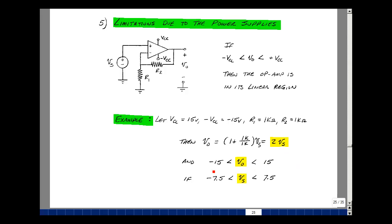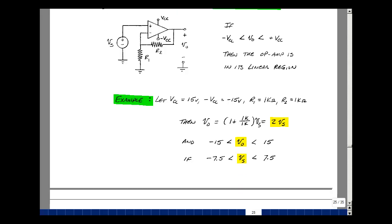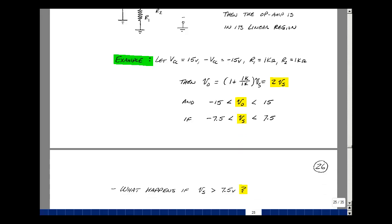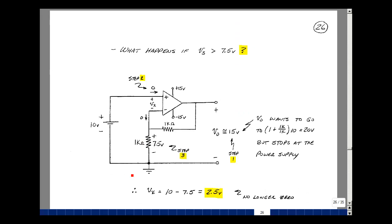Now, V-out is limited to plus or minus 15, and therefore V-sub-S, since it's going to be multiplied by 2, means that it has to be limited to plus and minus 7.5 volts. And what would happen if we were to make V-sub-S 10 volts? The output wants to be 1 plus 1k over 1k times 10, that's 20 volts, but this can't exceed 15, so it's going to stop there.